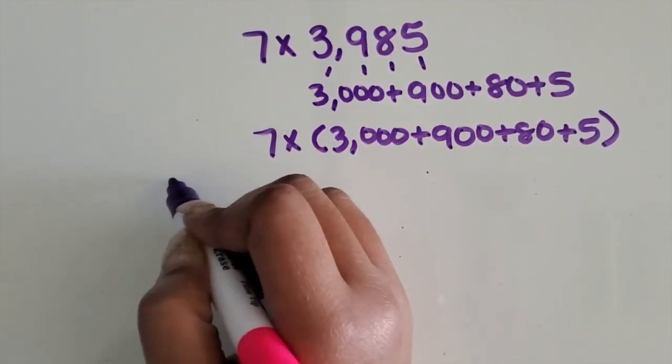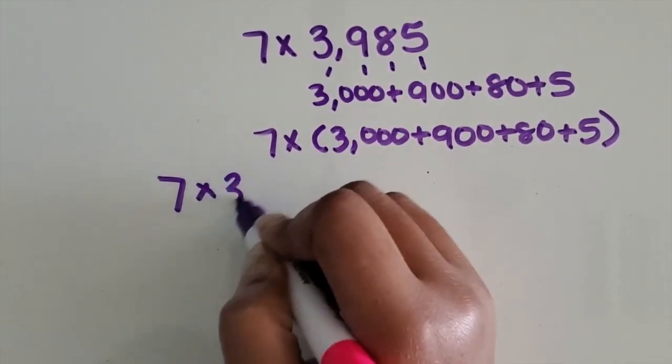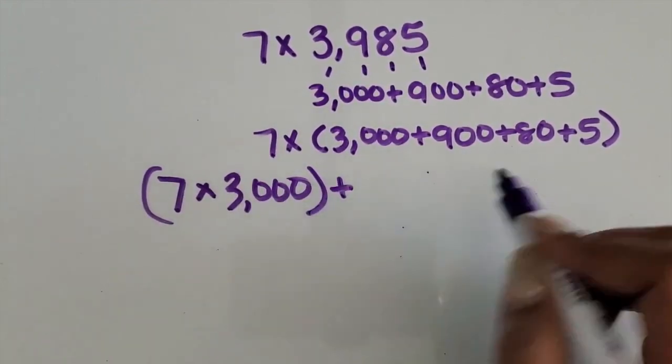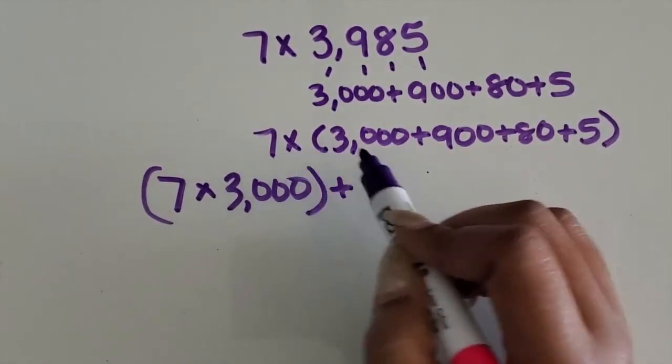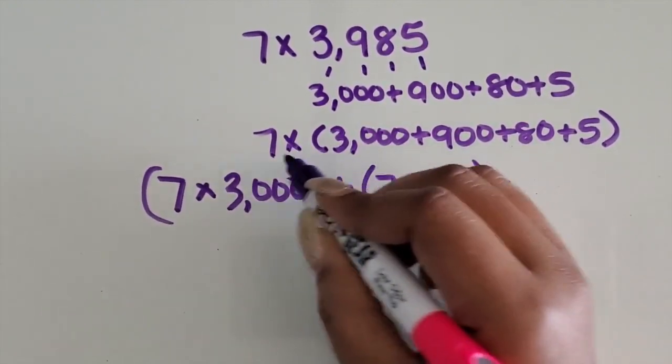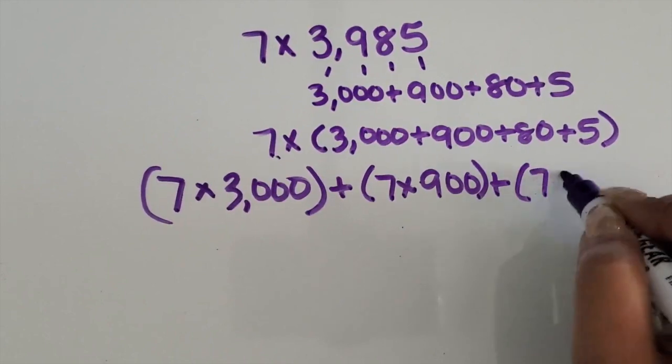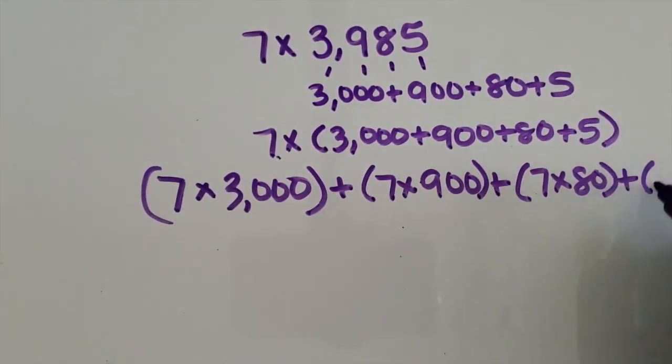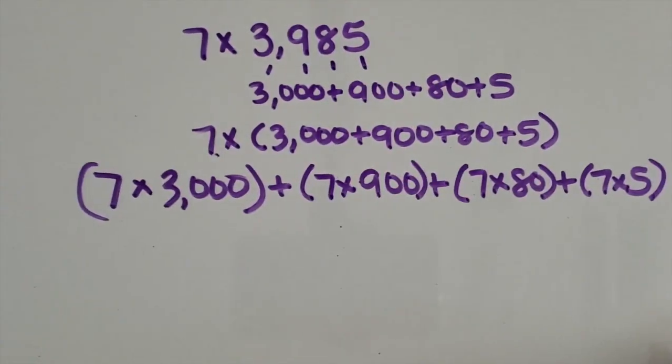And then we're going to distribute that seven with each value or each place in that four-digit number. So I'm going to start over here. Seven times 3,000 is what we're going to work on first. We're going to add it to the next expression. Seven times 900. Seven times 80. And seven times 5.